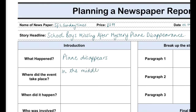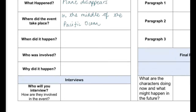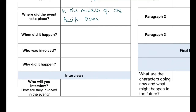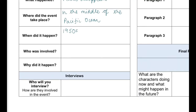Then we need to talk about 'where' the event took place. I've written in mine that the plane disappeared in the middle of the Pacific Ocean. The next W is 'when' — the book was set around the 1950s, so I've just put 1950s, but you can mix that up a bit; maybe you'll put 1954.